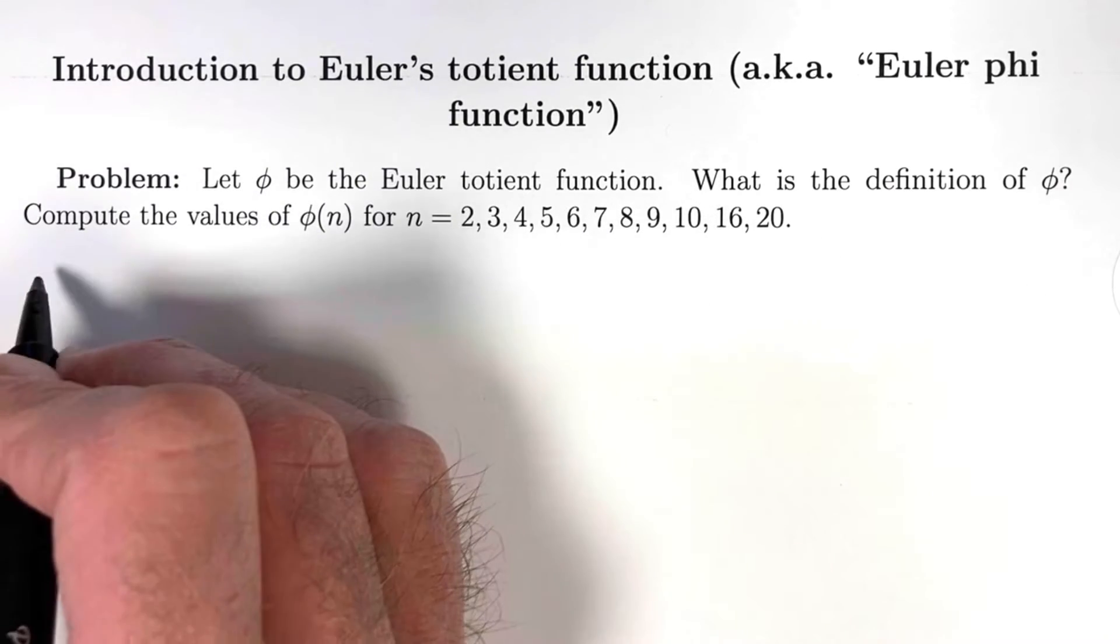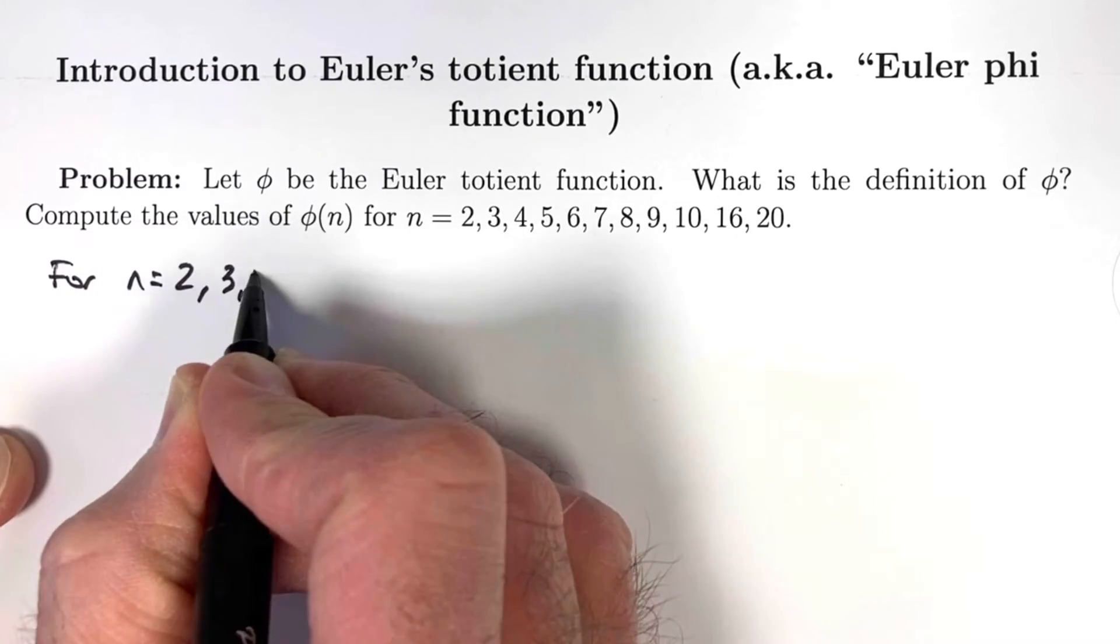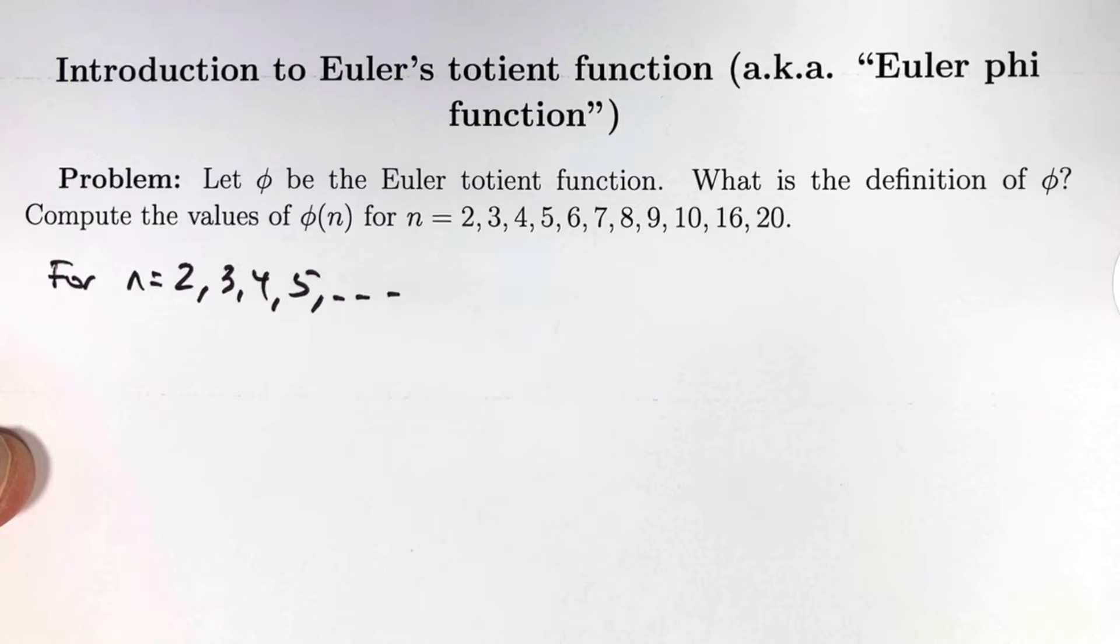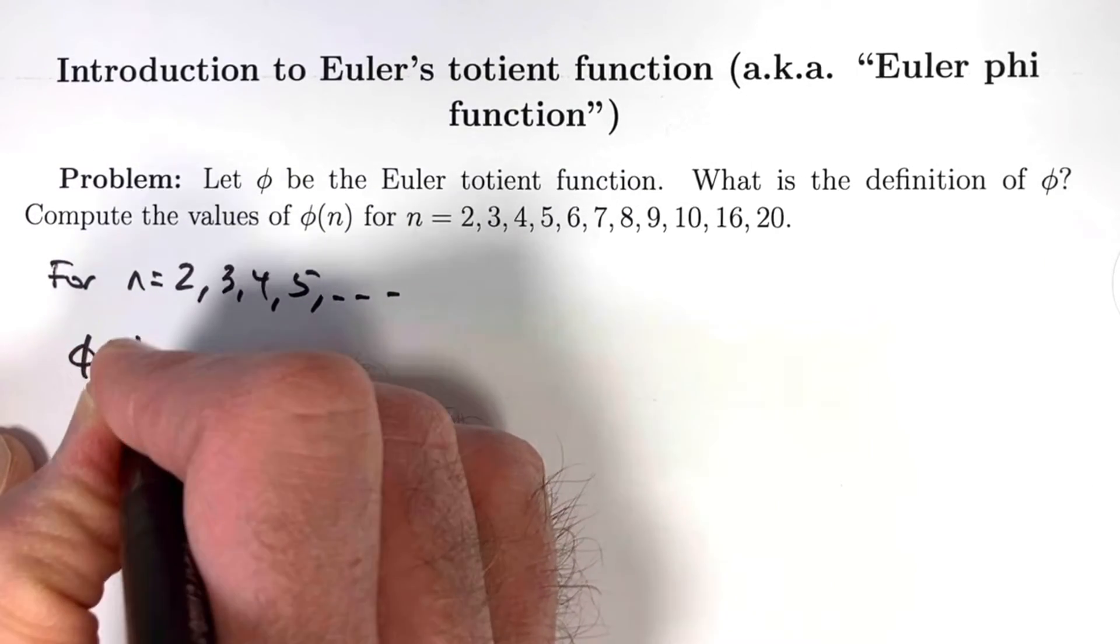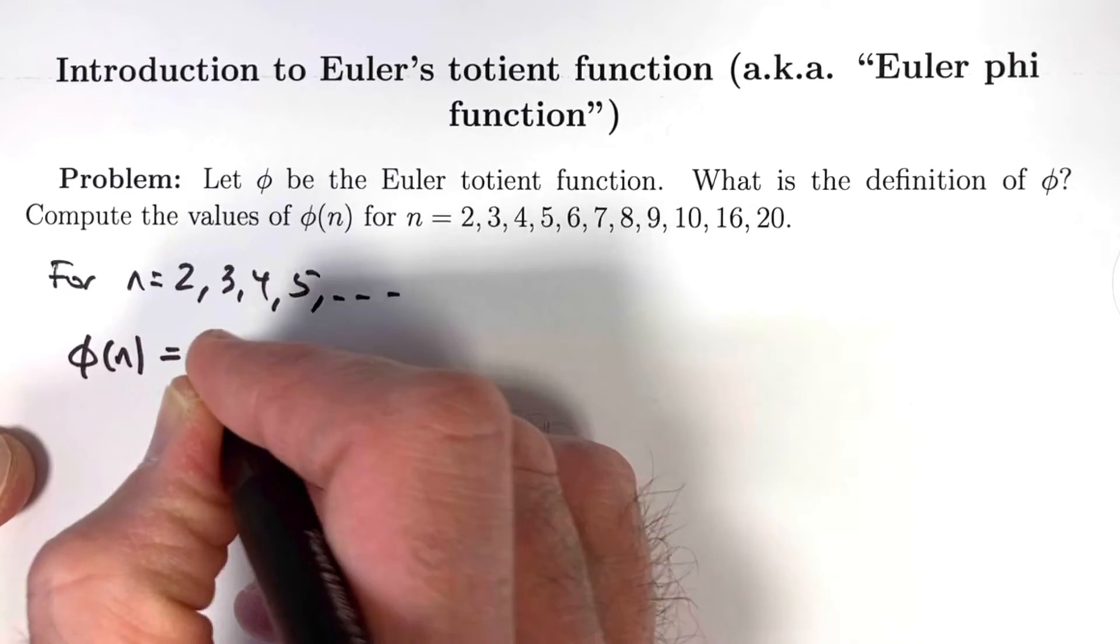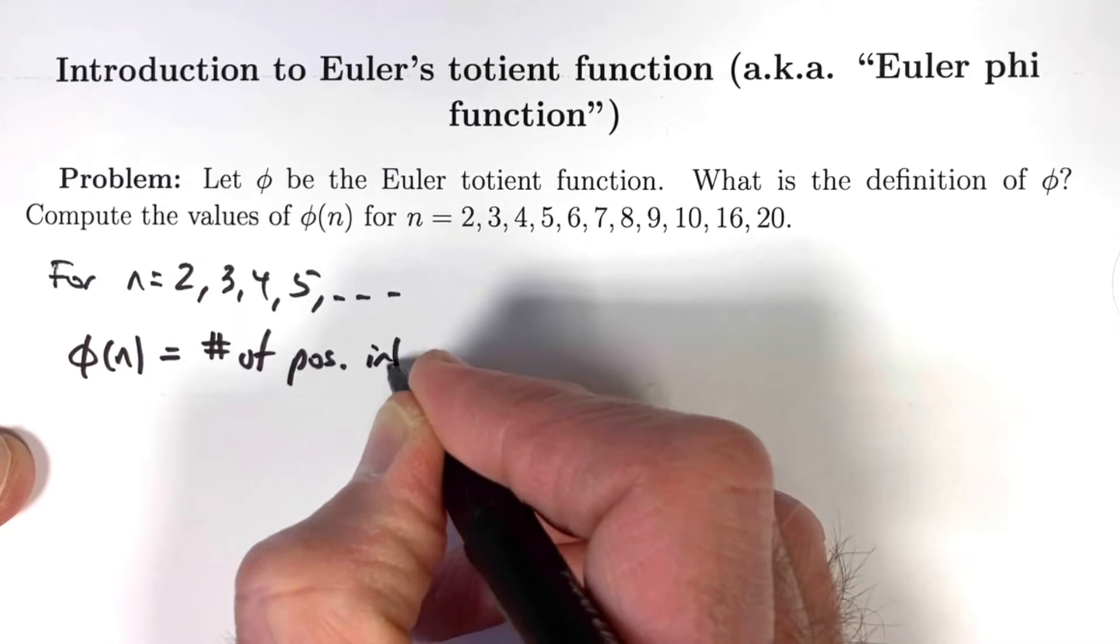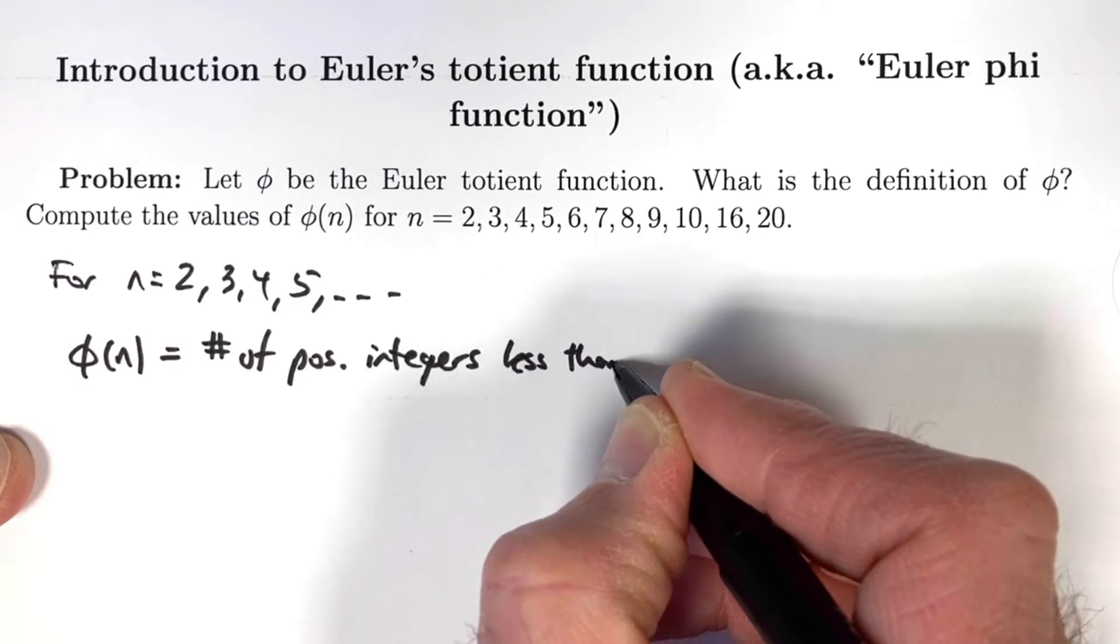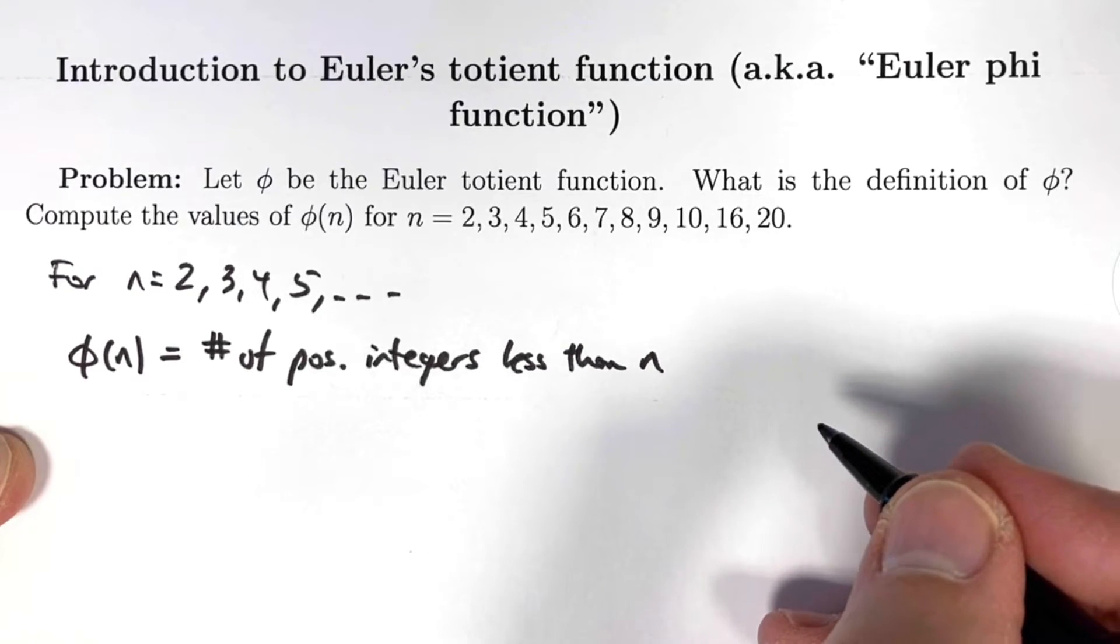Let's start with the definition. For n = 2, 3, 4, 5, etc., in other words all positive integers greater than or equal to 2, how is φ(n) defined? It's a number theory definition: the number of positive integers less than n that are also relatively prime to n, also called coprime.